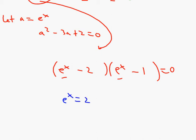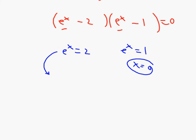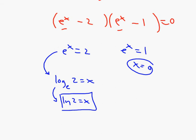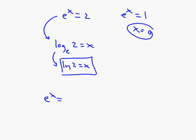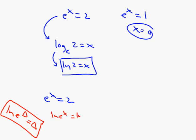So e to the x equals 2 and e to the x equals 1. By inspection, x equals 0 for the second one. For e to the x equals 2, you can write it in log form as log base e of 2 equals x, or ln of 2 equals x. Alternatively, take the ln of both sides: ln of e to the x equals ln of 2, and by the rule that ln of e to the triangle is just triangle, you get x equals ln of 2. Either way gives the same answer.